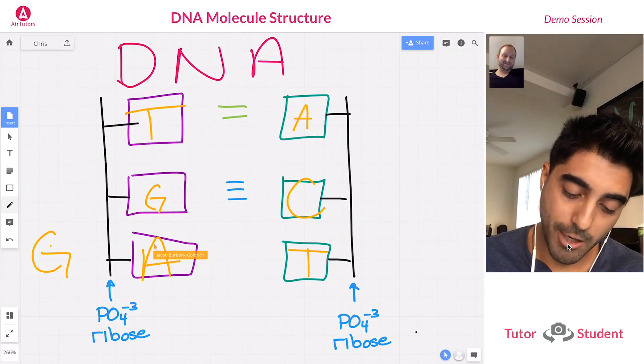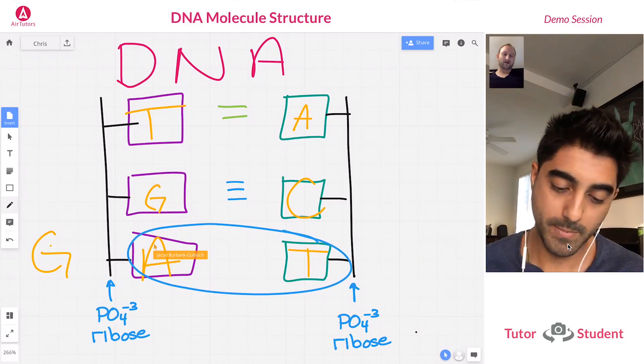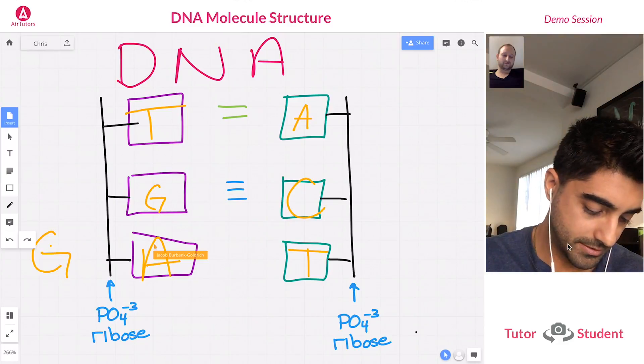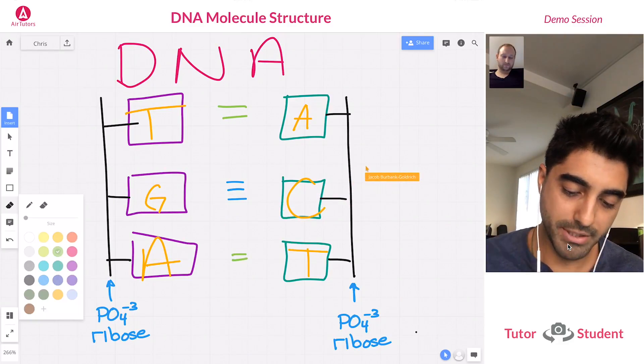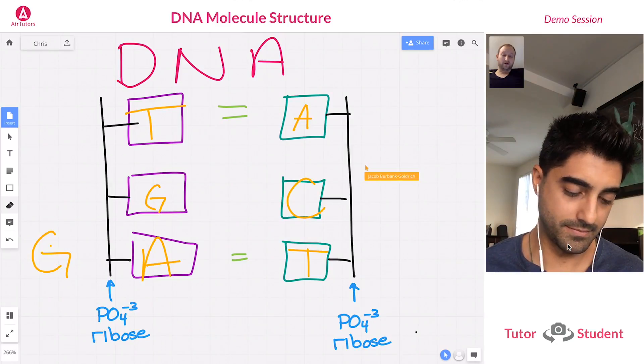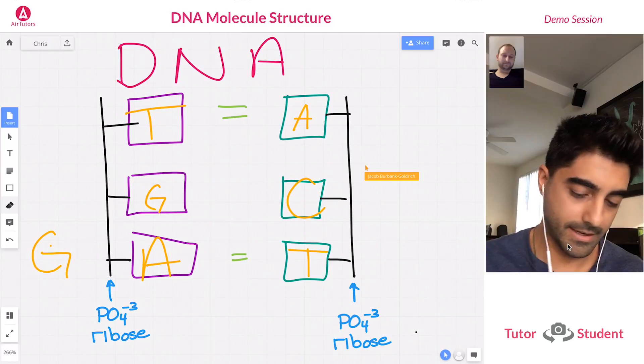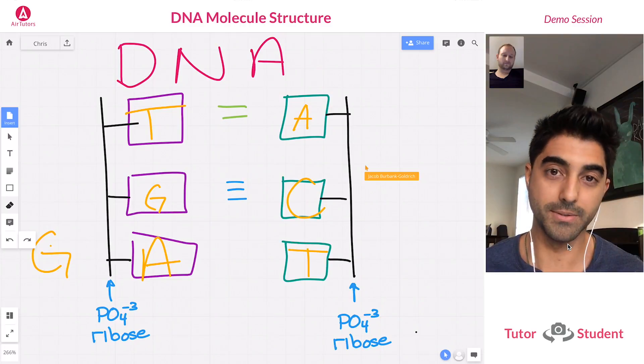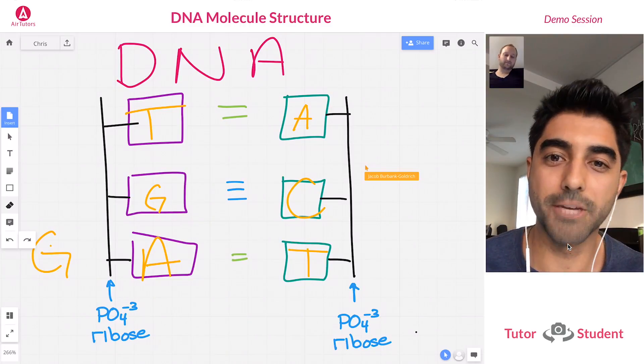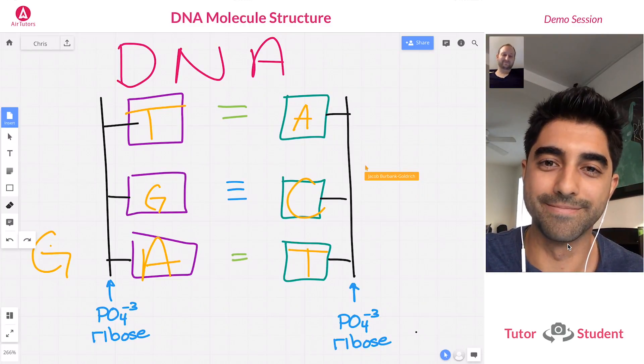Cool, so three. And then how many are between A and T again? Two. Good job. So let's just do a quick recap. How many are between G and C? Three. Perfect, so there's three right here, right? And how many are between A and T? Should be two. Cool, so two and two. Awesome, good job Jacob. Thank you. Yeah, no problem.